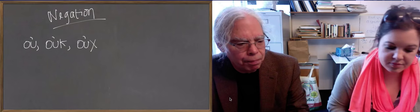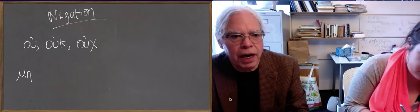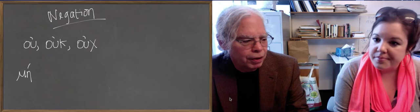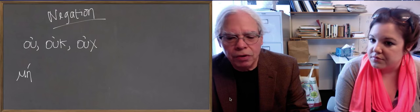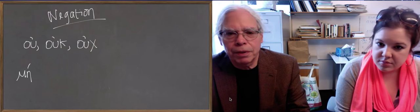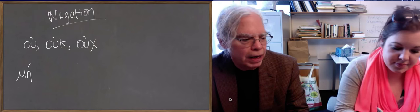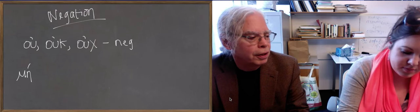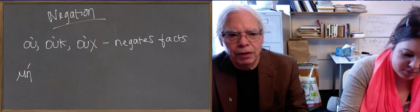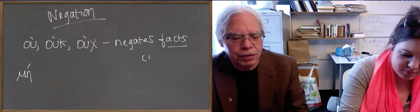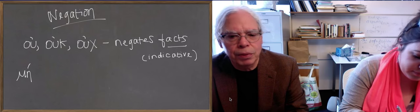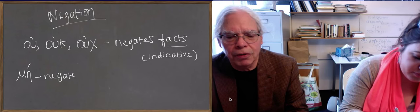And then the other negative is me, mu eta, and it has an accent. It doesn't change its form in any shape or form. But here's a general rule about when to use one or the other. It's pretty simple. Oo negates facts, things that are real, indicatives. And me negates things that are hypothetical. Not things that are false, but things that are hypothetical. And that's the last piece.